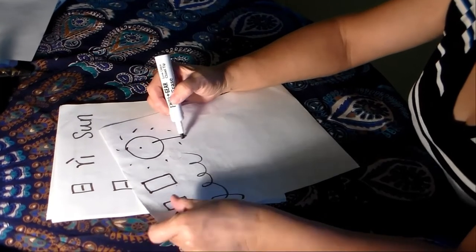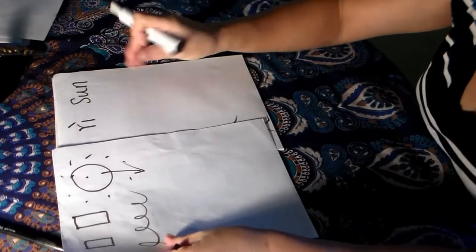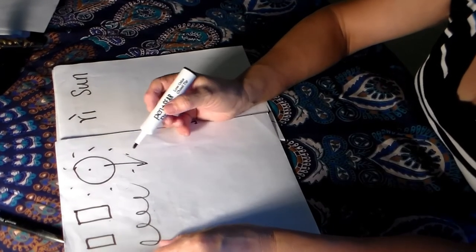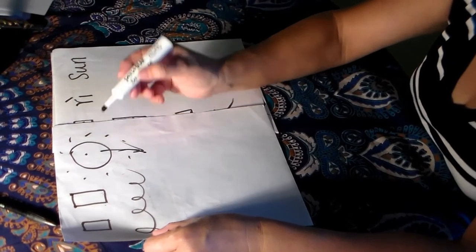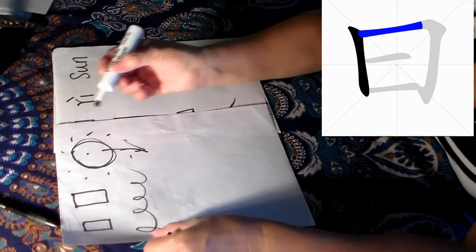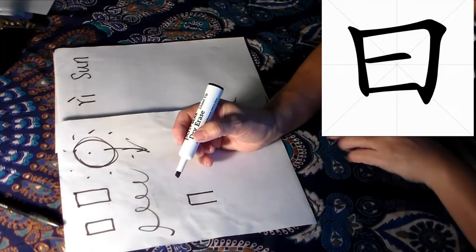So this will be very easy to our, the history, you know, the people develop this word from the sun looks like this. So sun is like rectangle shape.